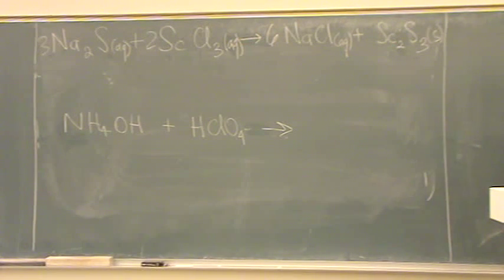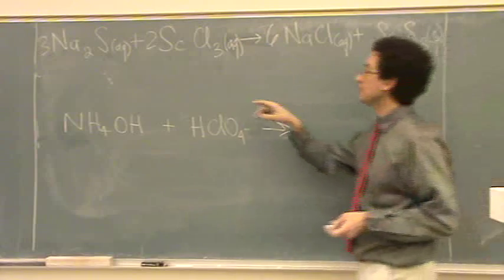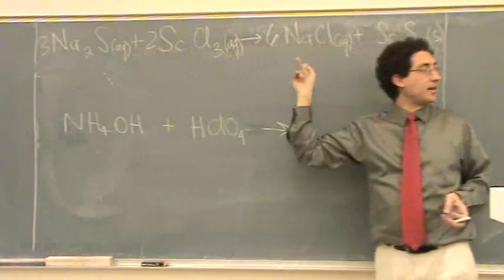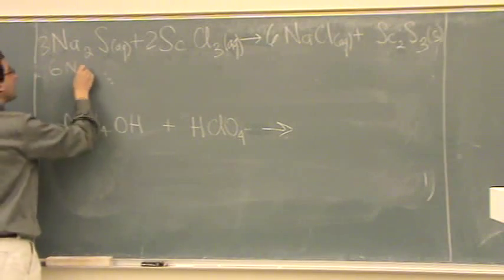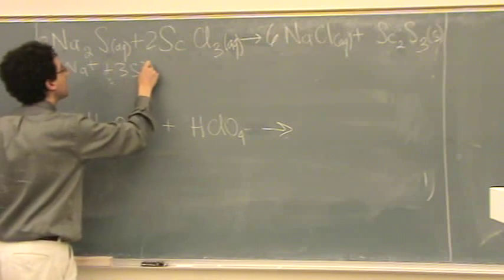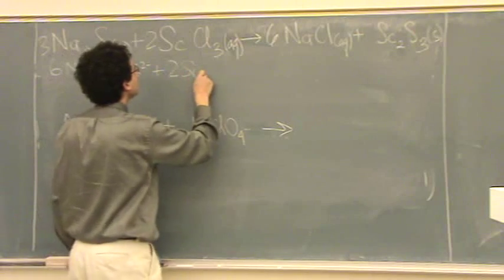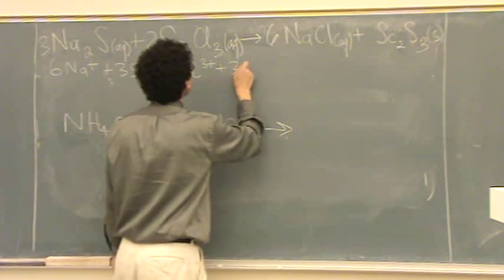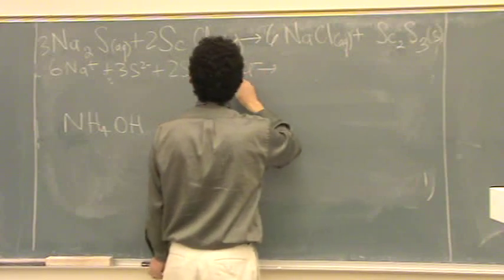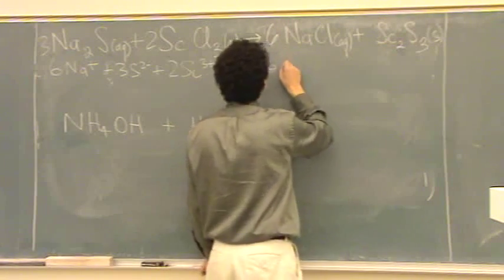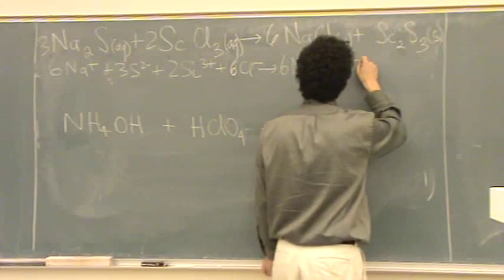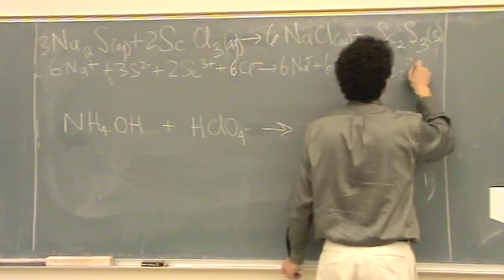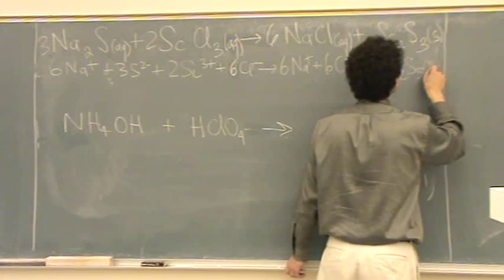So next, what we need to do is everything that's a strong electrolyte can be split up into pieces. Well, all salts or ionics will be strong electrolytes, so they all can be separated out. We've got 6 Na+, plus 3 sulfide ions, plus 2 scandium 3+, plus 6 chloride ions, plus 6 sodiums and 6 chloride ions, and then scandium sulfide, that's a solid.